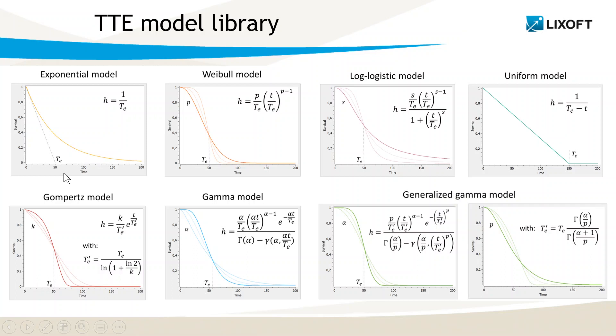For example, in the Weibull model, the Hazard depends on the parameters TE and P, and the value of P affects the shape of both inflections of the Survival curve. The library is documented with a table of typical parameter values for each model.